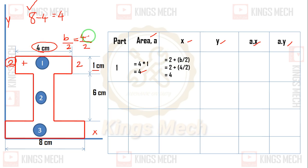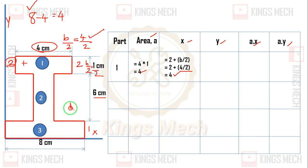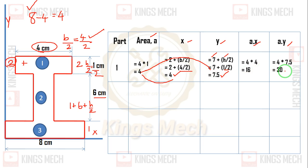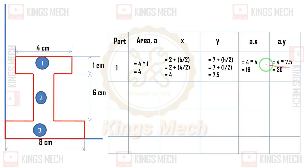So x equals 2 plus b/2, that is 2 plus 4/2 which equals 4. Likewise in the y direction, the value is h/2. h is 1, so 1/2 gives 0.5, then 1 plus 6 equals 7, so 7 plus h/2 equals 7 plus 0.5 equals 7.5. So the values are: area 4, a·x = 4 into 4 = 16, and a·y = 4 into 7.5 = 30. That is the first part.